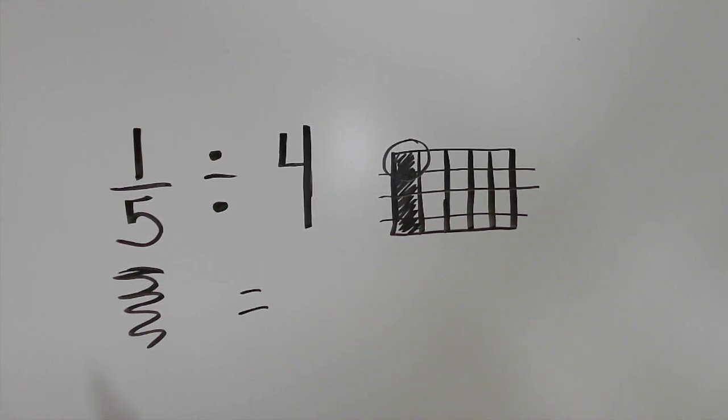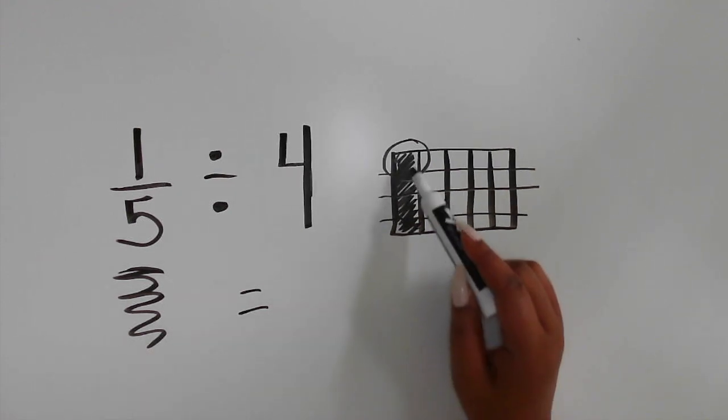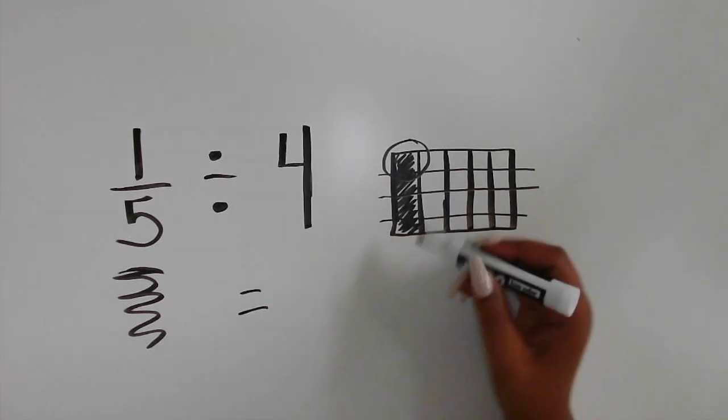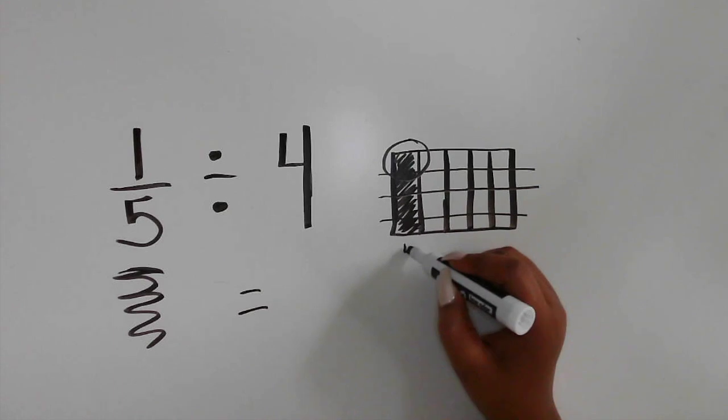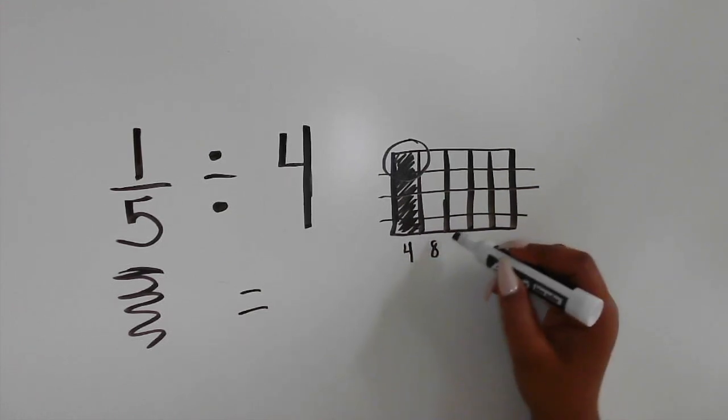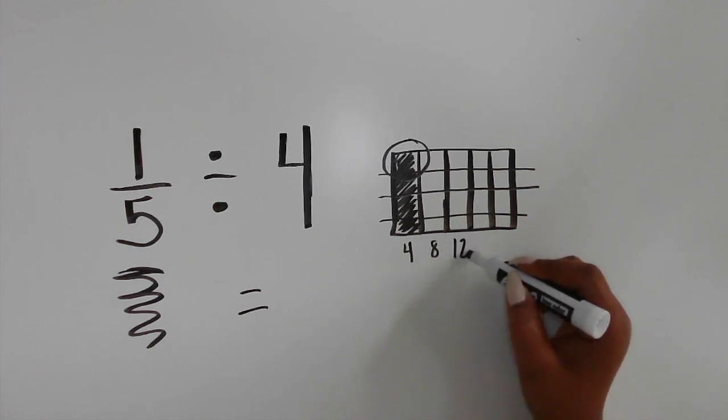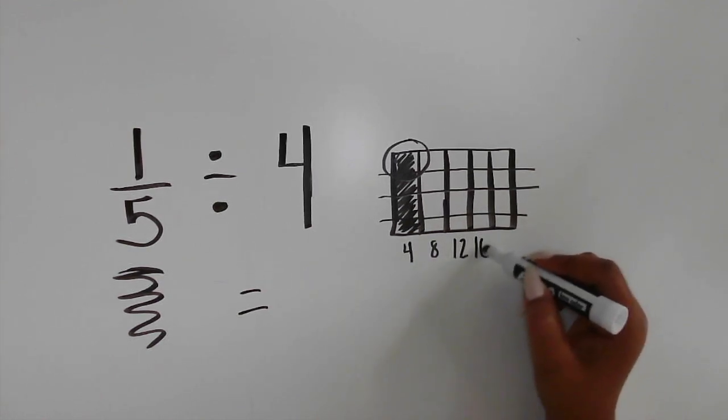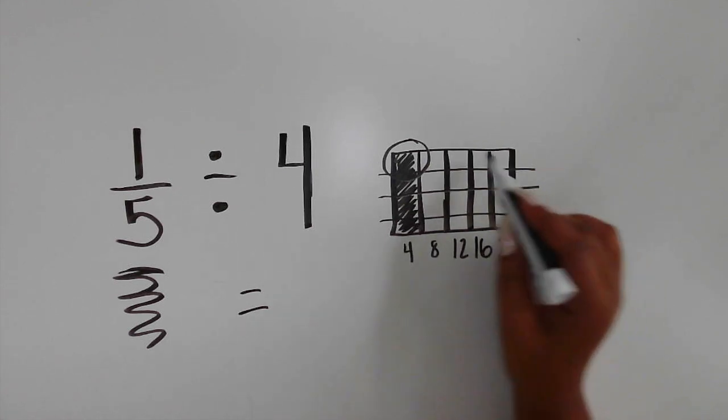Let's look at the amount of parts in a column. 1, 2, 3, 4. Or you can skip count. 4, 8, 12, 16, 20 total parts.